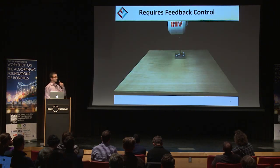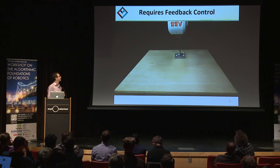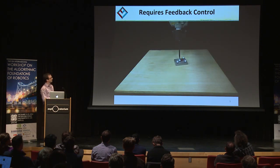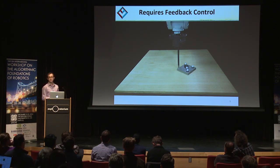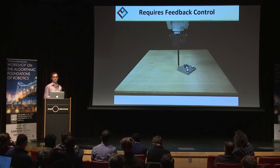This is the problem we're trying to solve. We want the slider to go in a straight line trajectory at a constant velocity. But if your robot is not reactive, you can't achieve this. You need feedback control in order to stabilize this unstable system.